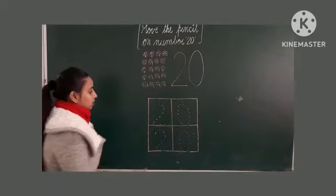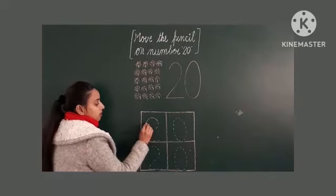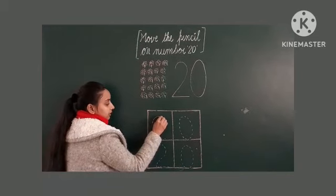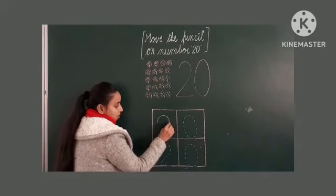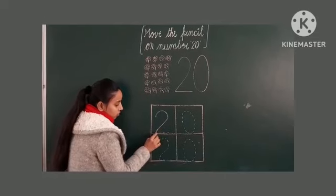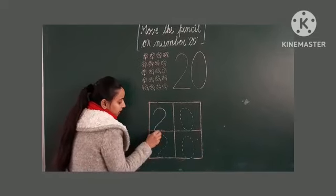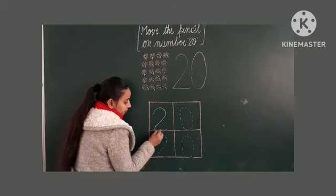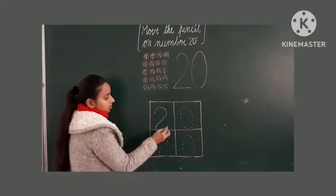Now, make a half circle like this and now make a slanting line and join it here and then make a sleeping line. It's called 2.